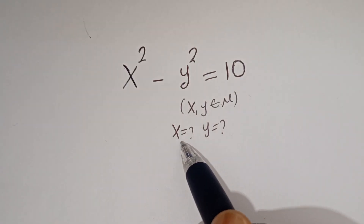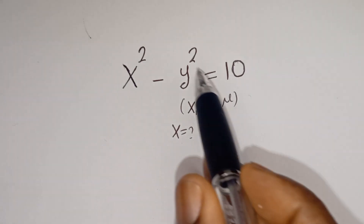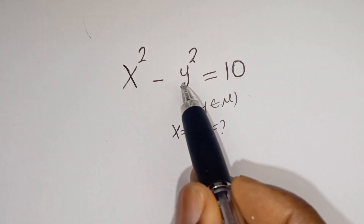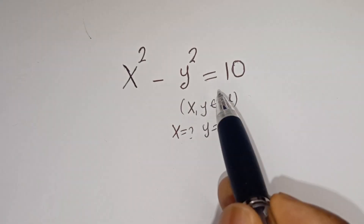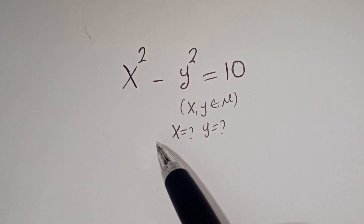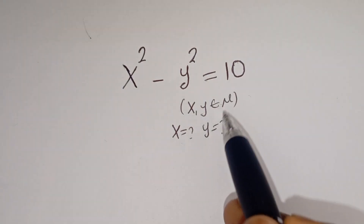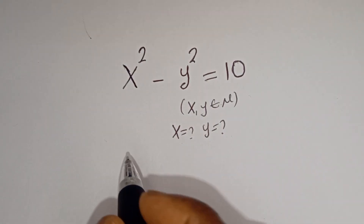Hello. How to solve for X and Y in this equation: X squared minus Y squared is equal to 10, where X and Y are members of the natural numbers.